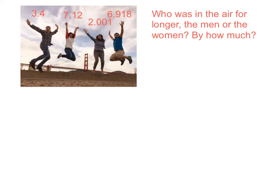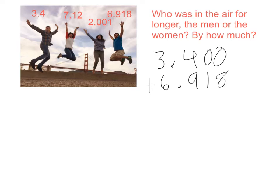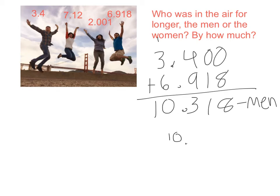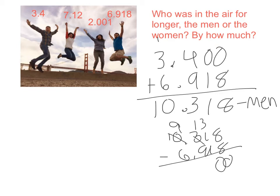Let's work through this. The question asks who was in the air longer, men or women, and by how much. I can't just take David's time for the men — I need to add them up. So 3.4 plus 6.918. I need my place values here. That gives me 10.318 — I'll label that 'men.' To check that, I would do 10.318 minus 6.918, and I get 3.4. Confirmed.